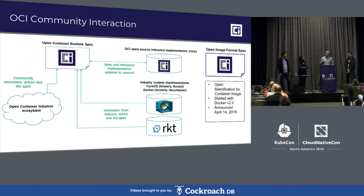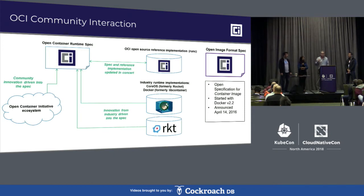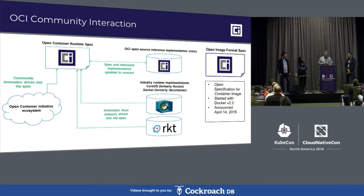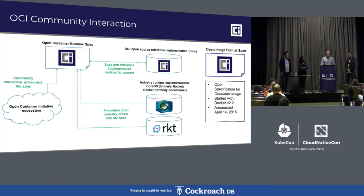But it wasn't just Docker. A shout out to Alex and Brendan and the team at CoreOS — they were working on interesting technologies including etcd and other things. There was a proposal to put out an alternative project called Rocket, done really as a way of underscoring the importance of choice and alternatives. Nobody wanted a world where you had to decide at that level of the technology stack. As part of the OCI process, technology from both Rocket and Docker contributed to the specification process, and ultimately Run-C became the codebase contributed to found OCI.